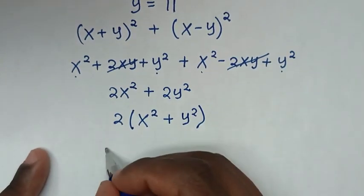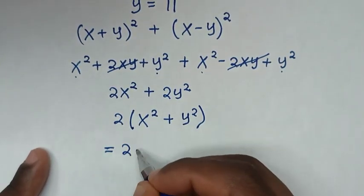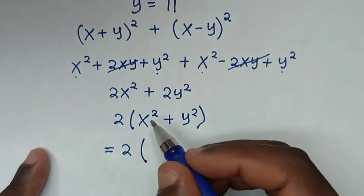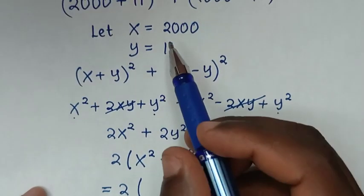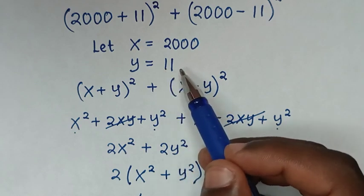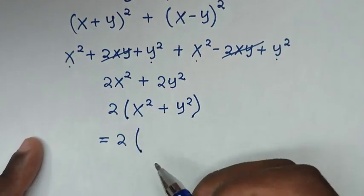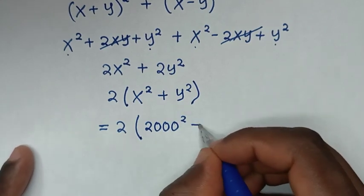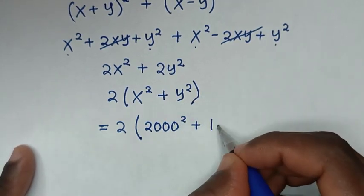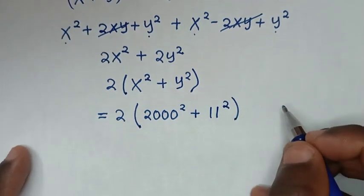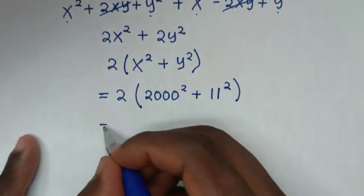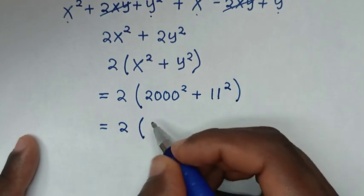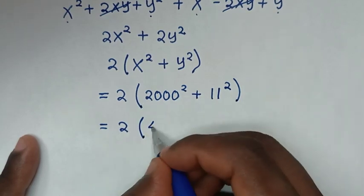This equals 2 times x² plus y², which equals 2 times (2000² + 11²).